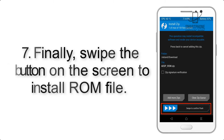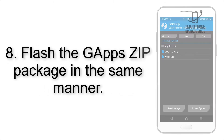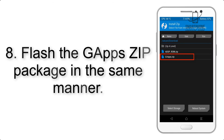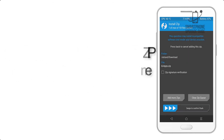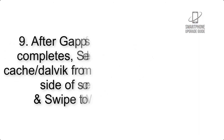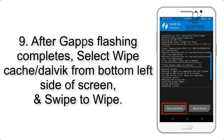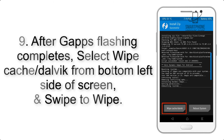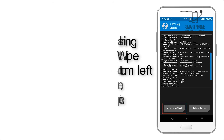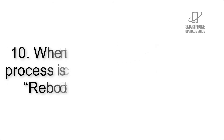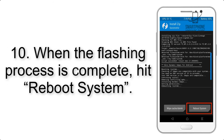Step 8: Flash the GApps zip package in the same manner. Step 9: After GApps flashing completes, select Wipe Cache and Dalvik from the bottom left side of the screen and swipe to wipe. Step 10: When the flashing process is complete, hit Reboot System.